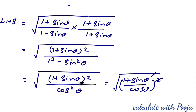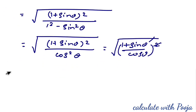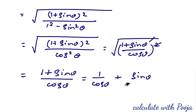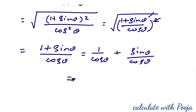The square root and the whole square cancel, giving (1 + sinθ) / cosθ. Splitting the denominator: 1/cosθ + sinθ/cosθ = secθ + tanθ, which is our RHS. Hence proved.